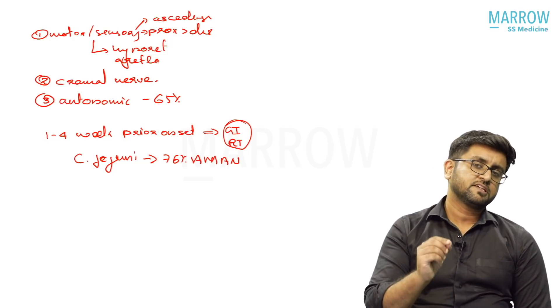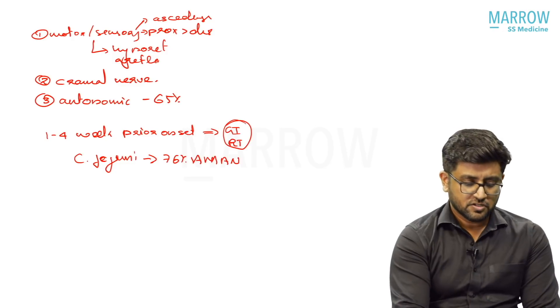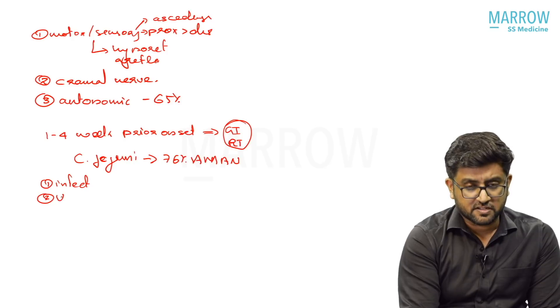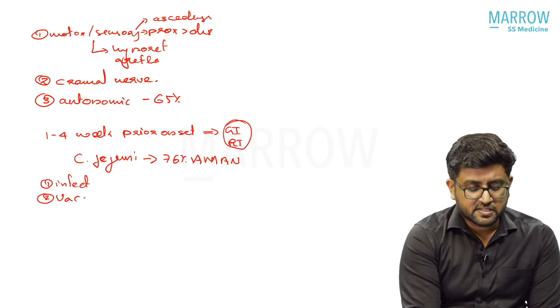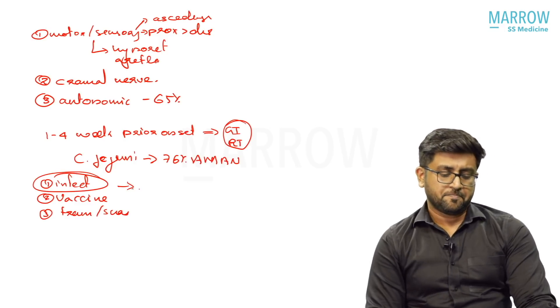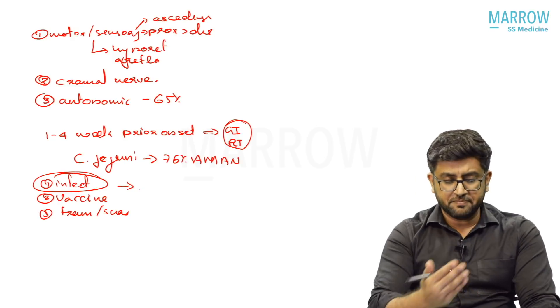From the surgery, bone surgery and GI surgery are high risk. The preceding events include infection, vaccines, and third one is trauma or surgery. These - infection being the most common. And this is about the symptomatology.